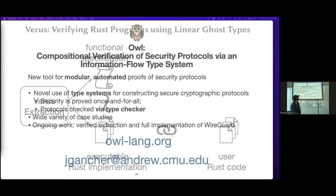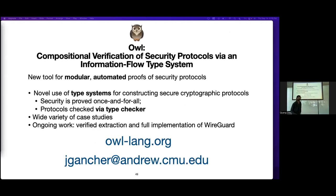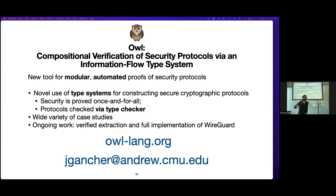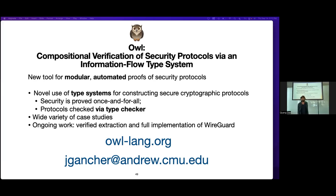To wrap up: OWL is a compositional verification tool for security protocols using information flow. Its advantages are that it's modular, automated, and computationally secure — just what you want from a crypto proof. It uses novel type system techniques for constructing secure protocols: you prove security once and for all about the type system, and protocols are verified just by type checking. We have a wide variety of case studies with ongoing effort into WireGuard, Kerberos, interoperability, and more. The development is publicly available, and I'm happy to chat offline or explore collaboration.